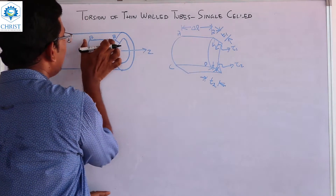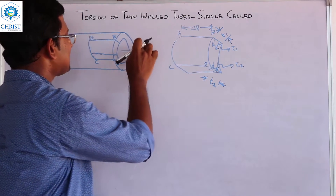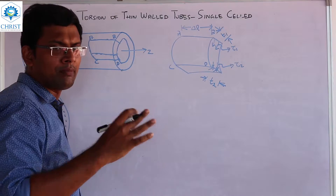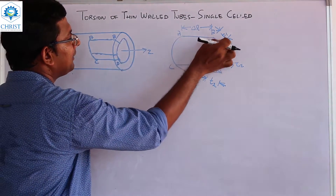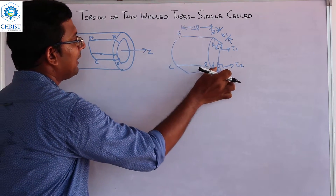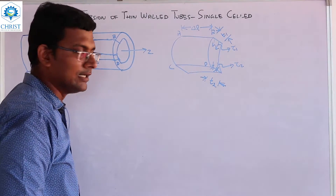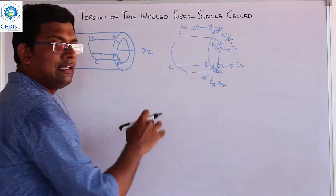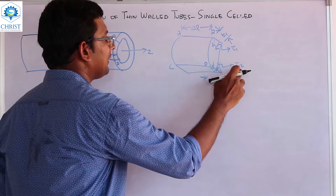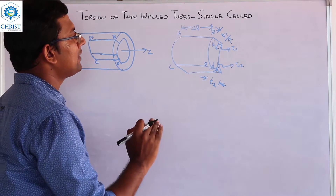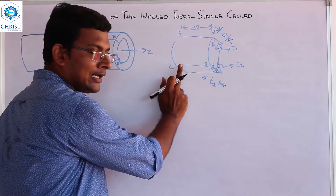The thickness of the tube is not uniform — it is varying thickness. On this end, the thickness of the tube is T1. The other end is T2. On one side the thickness is T1 and on the other half it is T2.